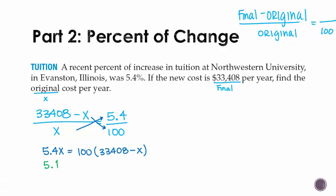Then we have to distribute that 100. So we'll leave this side as 5.4x. Multiplying by 100 is just going to add two zeros on the end of this. And then we'll get minus 100x.